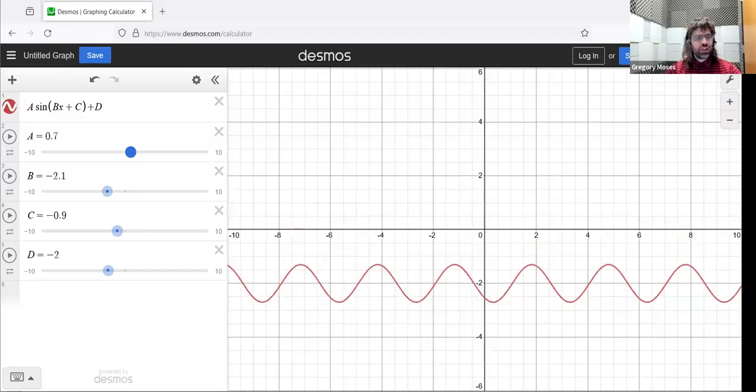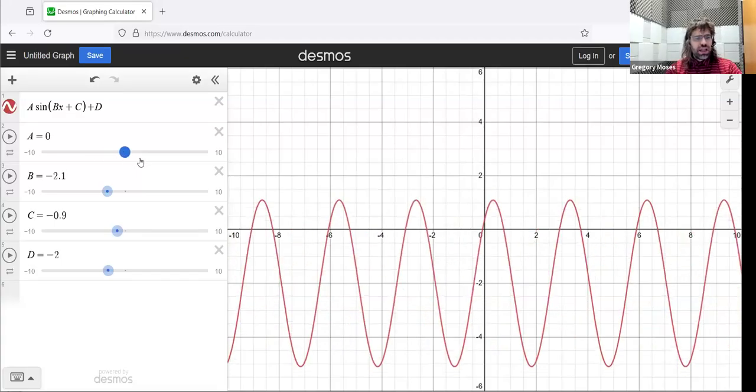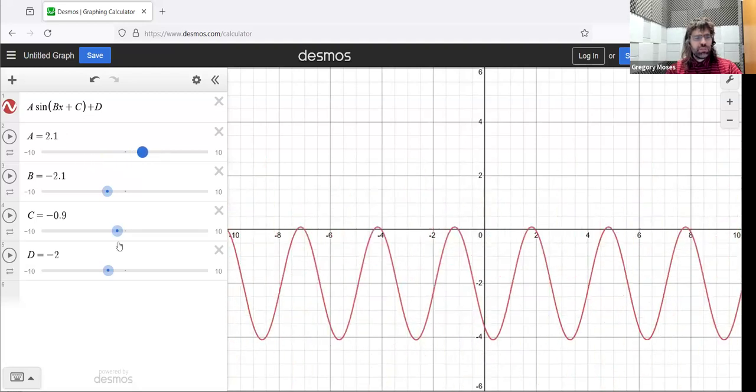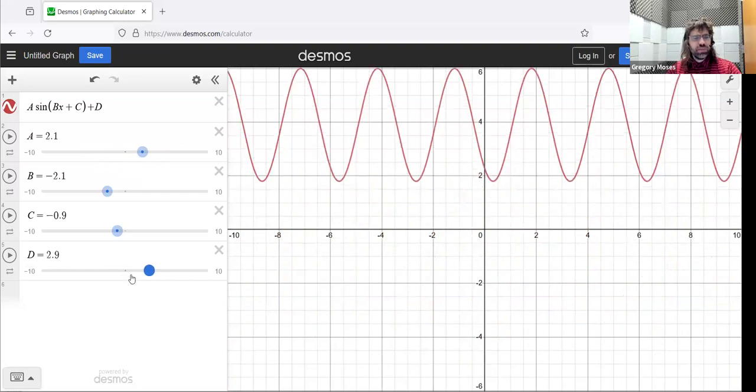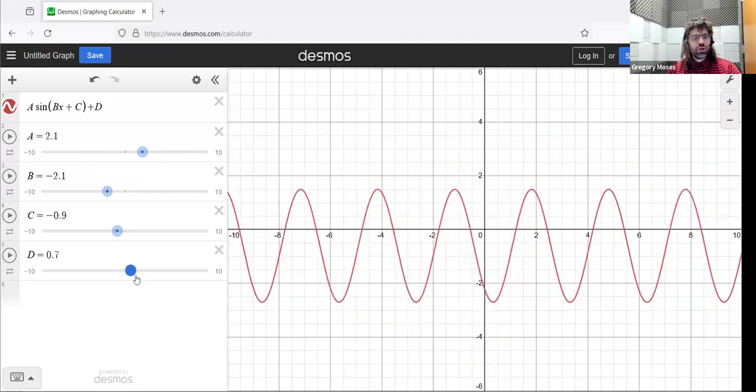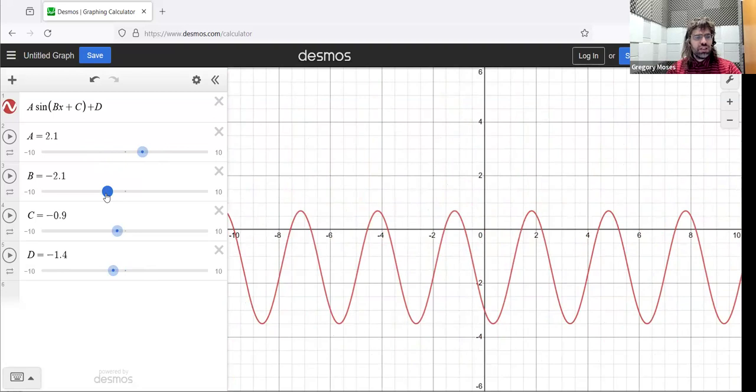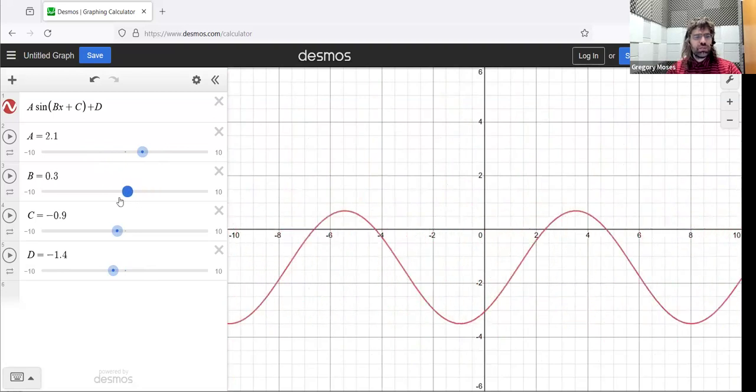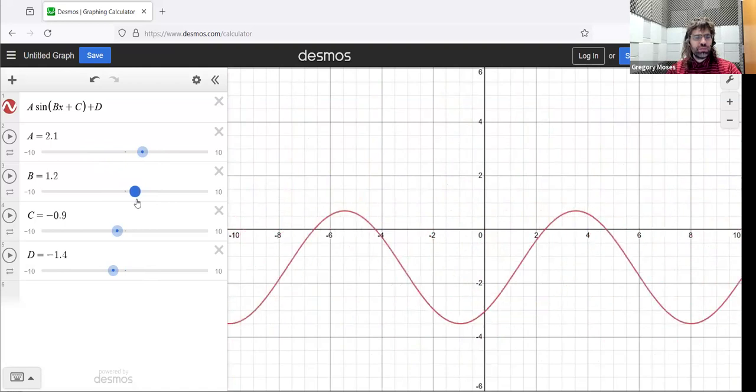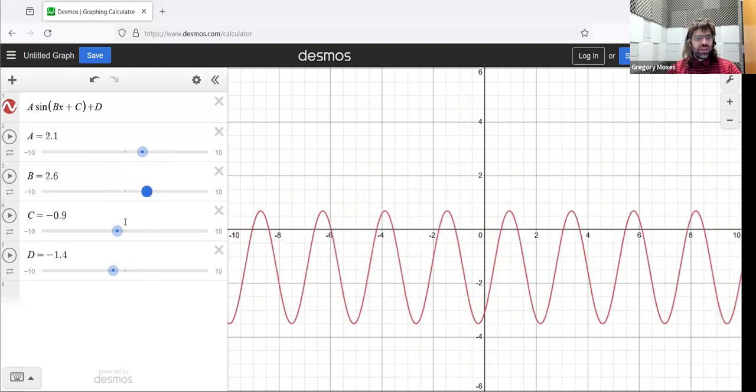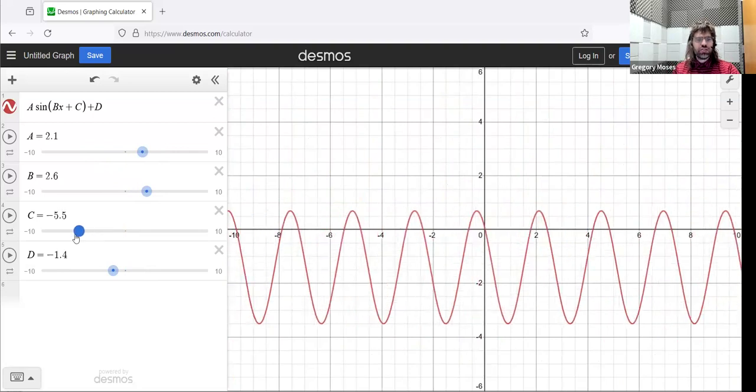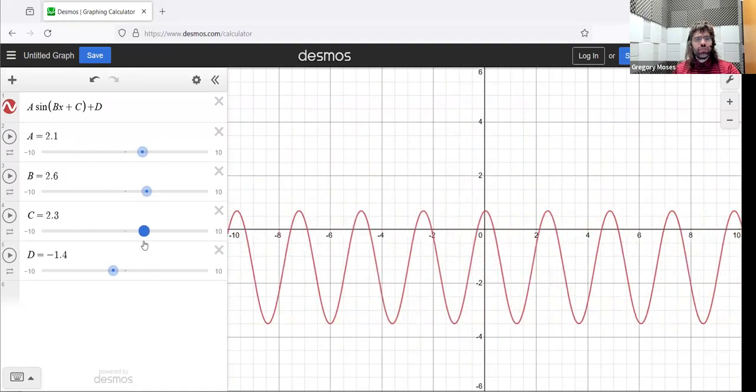Here's a sinusoidal function. We've seen that A controls the amplitude, D controls the vertical shift, and B controls the period. That should leave C to control the horizontal shift, which it certainly does. As I adjust C, you'll see it move horizontally.